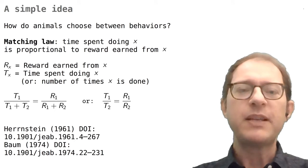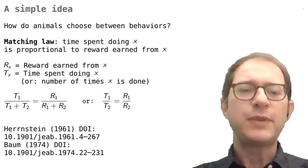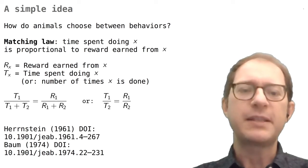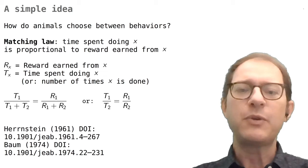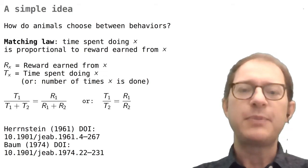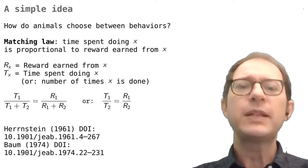In the first equation, t1 plus t2 is the total time spent in the activities that we are considering, like pressing the two keys, and r1 plus r2 is the total reward earned in these activities. There could be other things that the pigeon does, but according to the matching law, we can consider just two at a time, if we wish, to simplify our analysis.